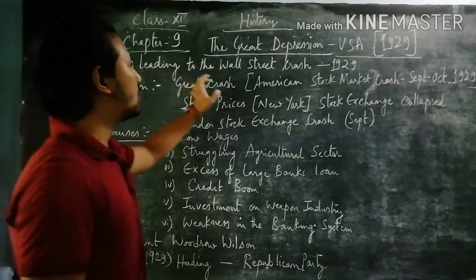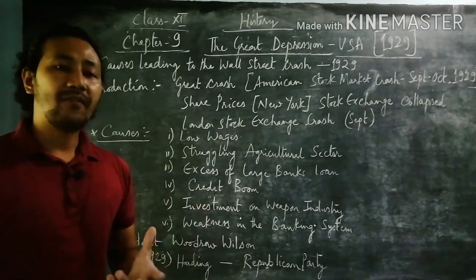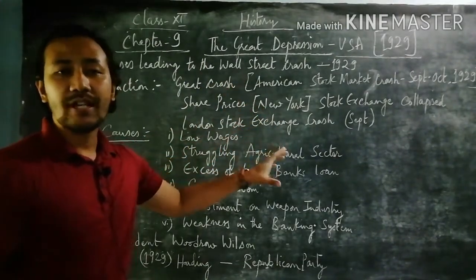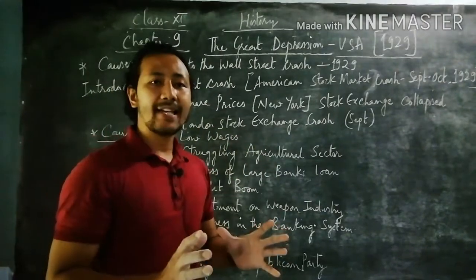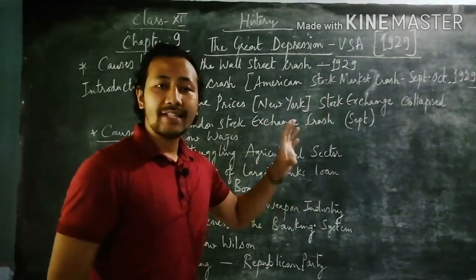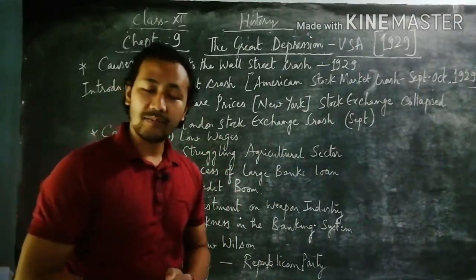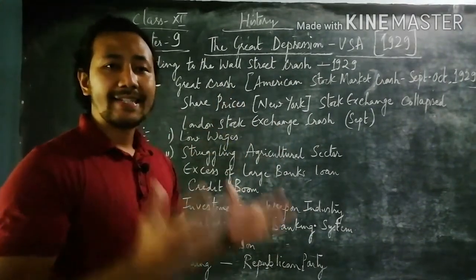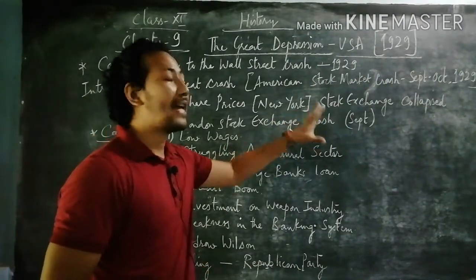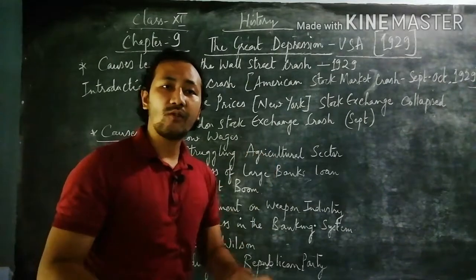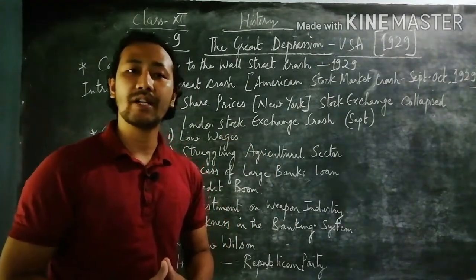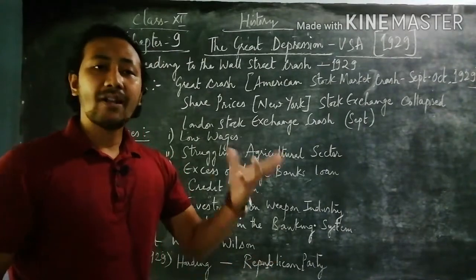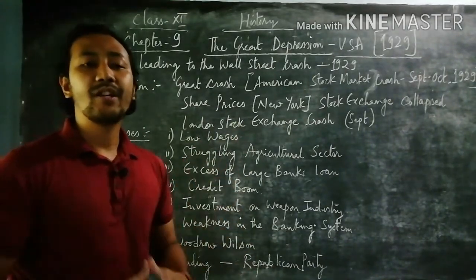Let's see the causes leading to the Wall Street Crash of 1929. The Great Depression of 1929 is also known as the Great Crash, where there was a stock exchange crash in America in the month of September, ending in October 1929. The share prices of New York — one of the main states of America — and the stock exchange collapsed completely. Based on that, the citizens of America had to face major problems regarding their jobs, health, and financial situation, which created a great depression for America in 1929.